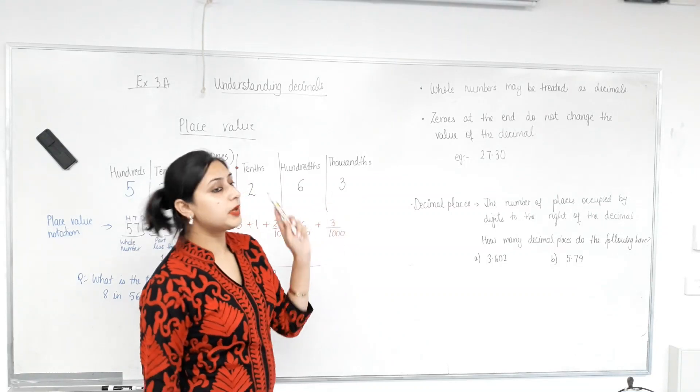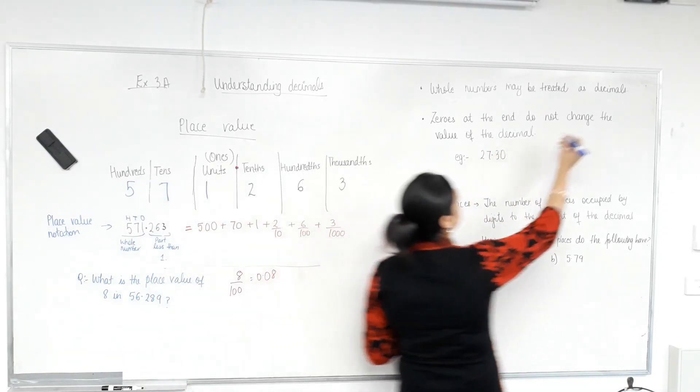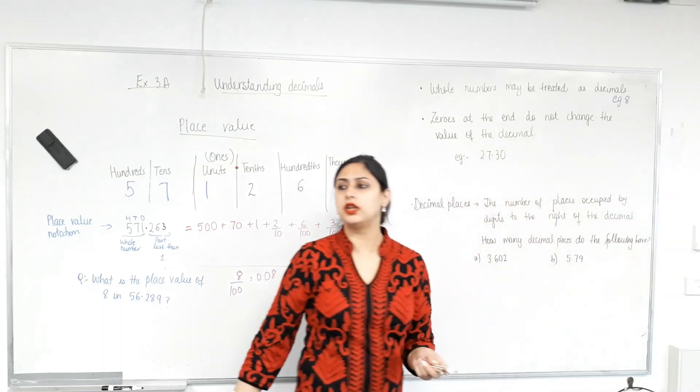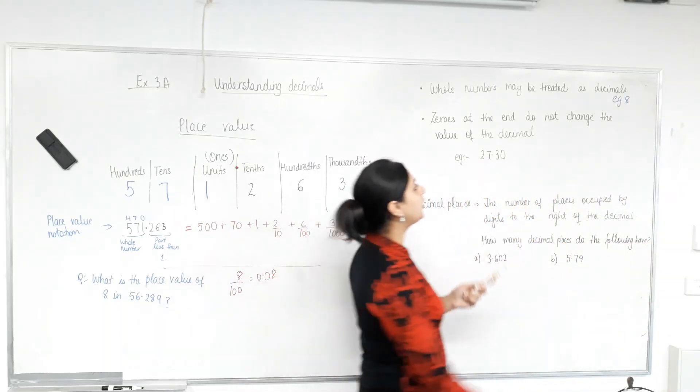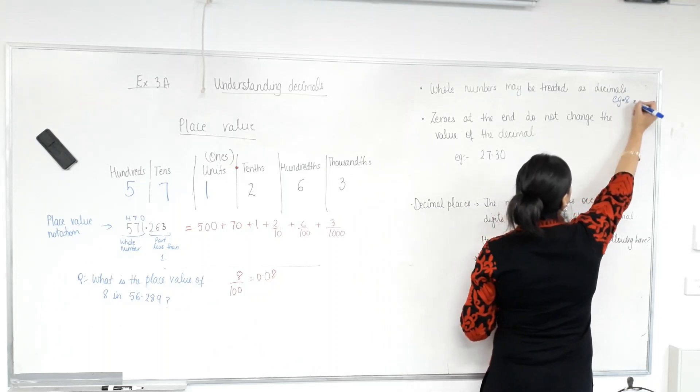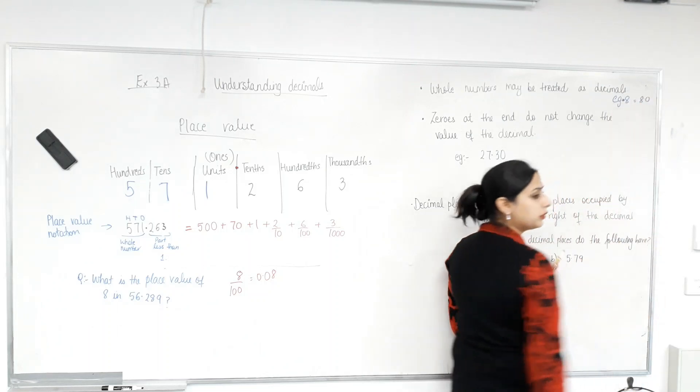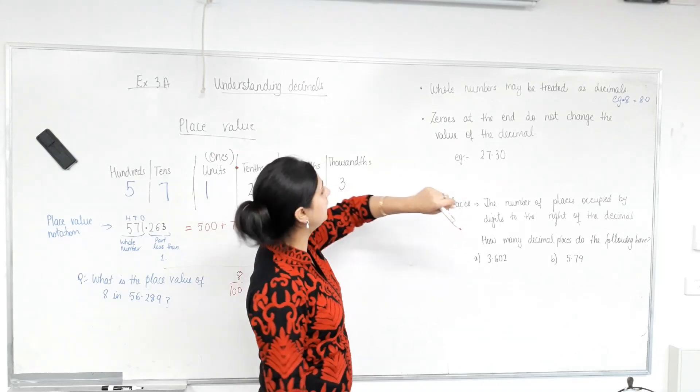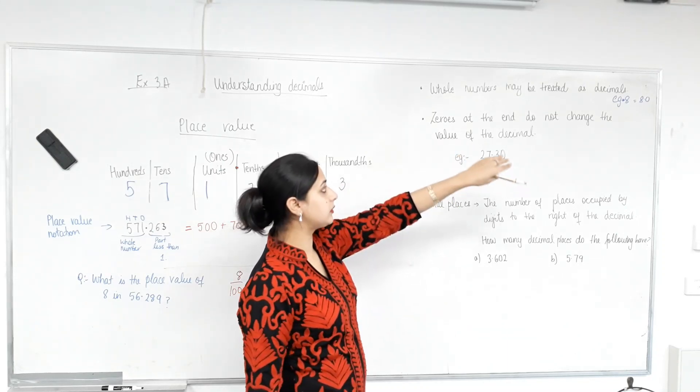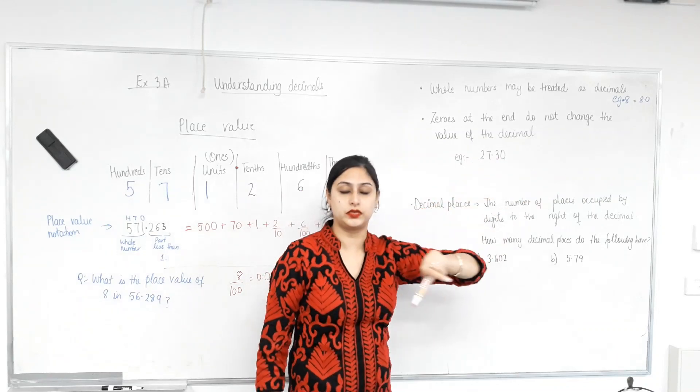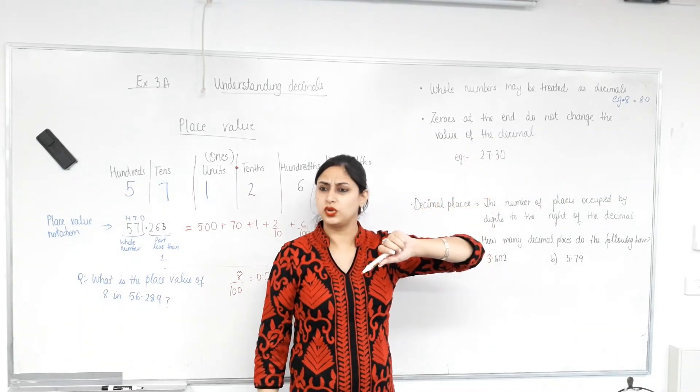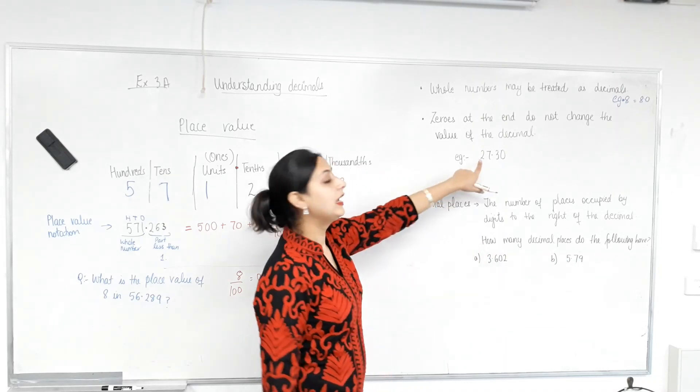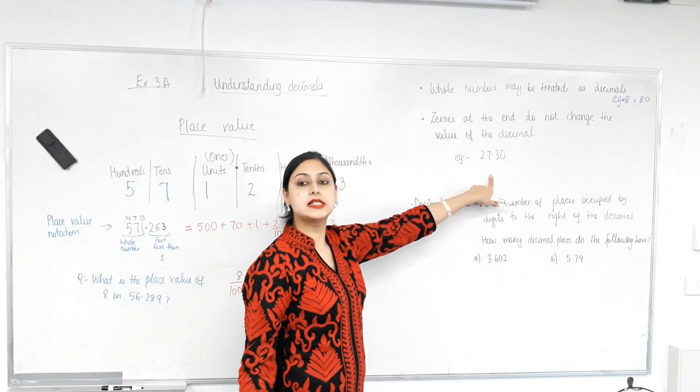Whole numbers may be treated as decimals. Can anyone think of how? So, for example, if you have number eight, what can you write it as? Eight point zero. Eight point zero. Example, eight can be written as eight point zero. That brings me to my next step, and we'll talk about it in a little bit of detail. Zeros at the end of the decimal do not change the value of the decimal. Eyes open. Okay. I thought that was obvious that we have to do that. Okay. Let's see how.